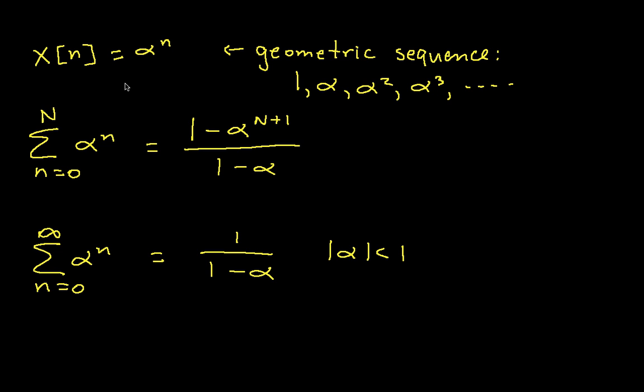For those who just want the formulas, here they are. The sum n going from 0 to cap N of alpha to the n is given by this expression: 1 minus alpha to the N plus 1 divided by 1 minus alpha. In just a second I'll do an example. This is true as long as alpha is not equal to 1. Obviously if alpha equals 1 this denominator blows up. But if alpha equals 1, the sum is just going to be cap N plus 1, because I'll have cap N plus 1 terms.